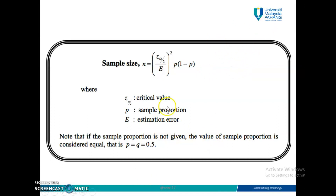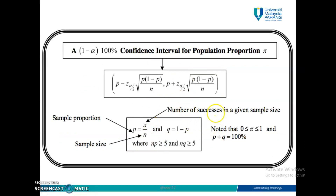Important here: you should know Z alpha over 2 — you get it from the Z table, the statistical table — which is a critical value. E is the estimation error, usually it's given in a question. P is a sample proportion which is X over N, and this is 1 minus P. Sometimes this can be replaced with Q — Q is 1 minus P, so sometimes they just use P and Q here.